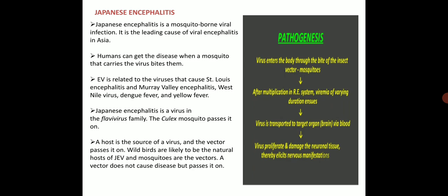The virus enters the body through the bite of the insect vector, that is the mosquito. After multiplication in the reticuloendothelial system, where the host defense inhibits virus hemagglutination, viremia of varying duration ensues — that is, the presence of viruses in the blood. When they accumulate in the blood, they are transported to the target organ — that is, the brain via blood — and these viruses proliferate and damage the neuronal tissue, thereby eliciting nervous manifestations.